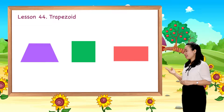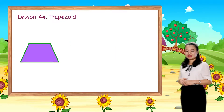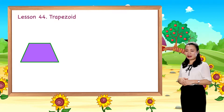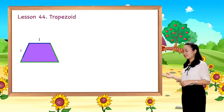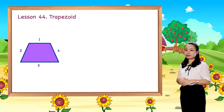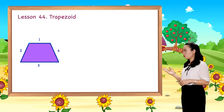This shape is a trapezoid. How many sides does a trapezoid have? It has four sides. How many corners does a trapezoid have? It has four corners.